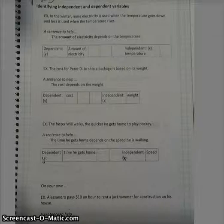Here's an example: in the winter, more electricity is used when the temperature goes down and less is used when the temperature rises. I like to do a sentence to help using the words 'depend on.' So here is the sentence that would help you determine which variable is which: the amount of electricity depends on the temperature.